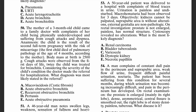Moving on to question 15: what diagnosis was most likely stated in the referral? We have a mother of a three-month-old child who came to a family doctor with complaints of the child being physically underdeveloped, suffering from cough attacks and dyspnea. In the history, the child is the result of a second full-term pregnancy with risk of miscarriage, and the first child died of pulmonary pathology at four months of age.